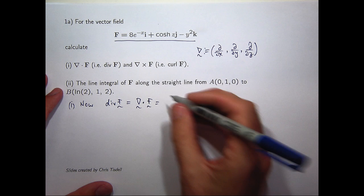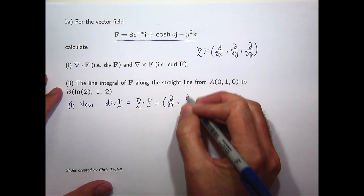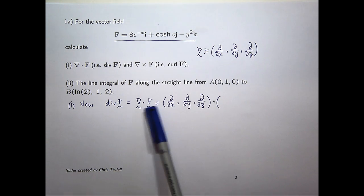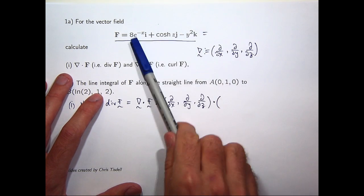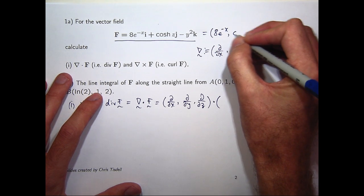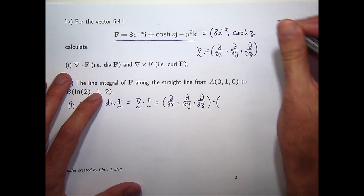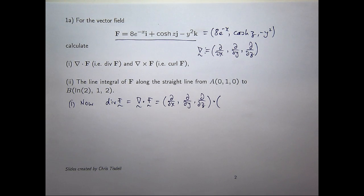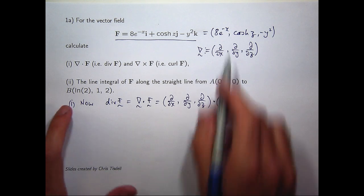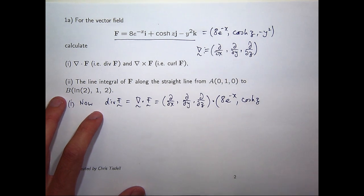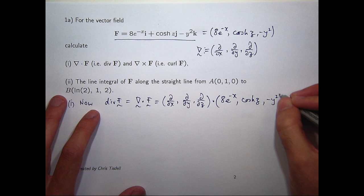If I was to write these out using the dot product notation, it's just the vector written as components. You could actually write this without the i's, j's, and k's just as an ordered triple. Either way is fine, as long as it's clear that this really is a vector field. So down here we would write something like 8e to the minus x cosh z, hyperbolic cosine, and minus y squared.